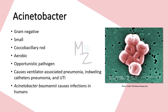Acinetobacter is a gram-negative small coccobacillary rod. Coccobacillary has two words in it: the first is 'coccus,' meaning sphere, and the second is 'bacillary,' from bacillus, meaning rod. So this bacterium is somewhere in between the coccus spherical shape and the bacillus rod shape.